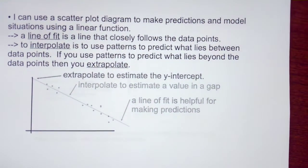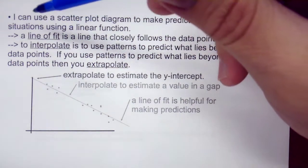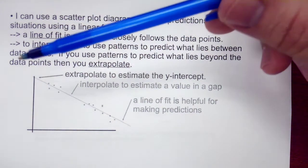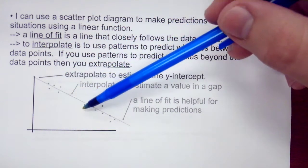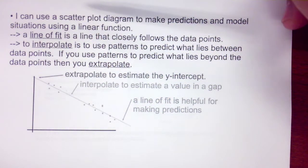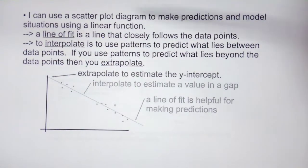So I can use a scatter plot diagram to make predictions on model situations using a linear function. A line of fit is a line that closely follows the data points. So we have our data points here, and then we have a line of best fit that kind of follows through that. You've probably heard me using that term before. But now we're actually getting the definitions. So these are definitions you might want to write down.